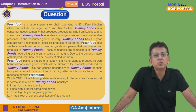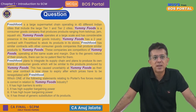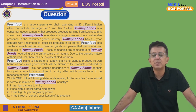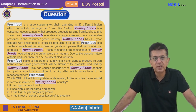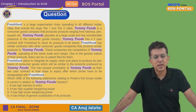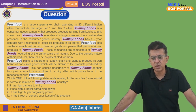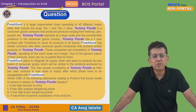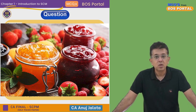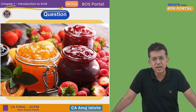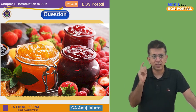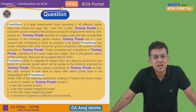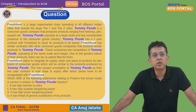Further, Fresh Foods plans to integrate its supply chain and produce its own brand of consumer goods, similar to the products manufactured by Yummy Foods. So Fresh Foods is now thinking: can we manufacture the goods we currently sell under Yummy Foods' brand? For example, if Yummy Foods manufactures jams, Fresh Foods is now thinking of launching its own brand to manufacture jams.